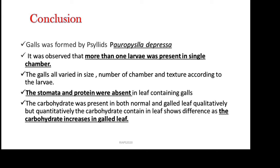In conclusion, GALs were formed by the psyllid Parosvila depressa in the Ficus plant. It was observed that more than one larva was present in a single chamber. The GALs varied in size, number of chambers, and texture according to the larvae. Stomata and protein were absent in the leaf containing GALs. Carbohydrate was present in both normal and GAL leaves qualitatively, but quantitatively the GAL-containing leaf showed higher carbohydrate content than the normal leaf.